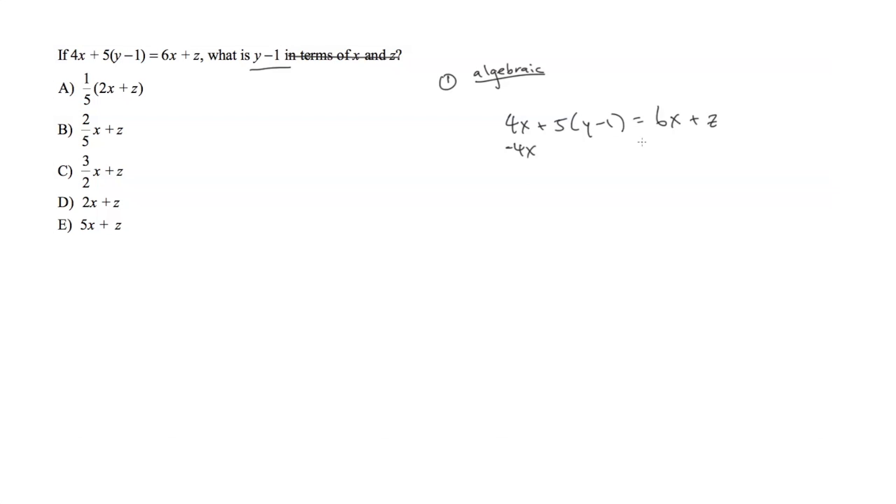So here I'm going to subtract 4x on both sides. And we have 5 times y minus 1, and that's equal to 2x plus z. Then we're going to divide 5 on both sides, and we get y minus 1 is equal to one-fifth times 2x plus z.